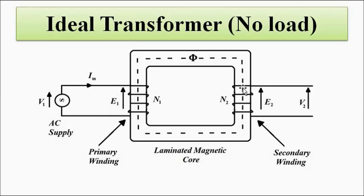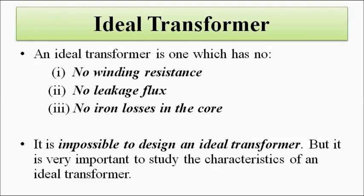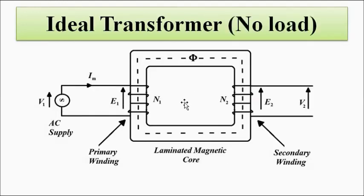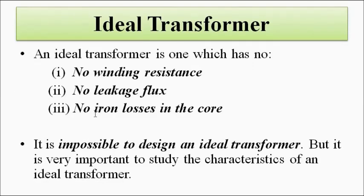Mutual flux is the flux produced in a winding that links with the other winding — it is the common flux. In an ideal transformer, all the flux generated links with both windings. In reality, there will be leakage flux. Also, in an ideal transformer there are no iron losses such as eddy currents and hysteresis losses, but in a practical transformer these do occur. It is therefore impossible to design a truly ideal transformer.